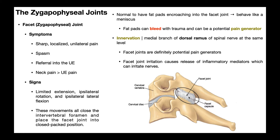Ipsilateral lateral flexion, or side bending, follows the same principle. If there's left facet joint dysfunction, laterally bending the neck to the left will also close that facet joint. The bottom line is that people with facet joint dysfunction will have limited movement and/or pain in any movement that brings the facet joint into more of a closed packed position — anything that closes or approximates that facet joint.